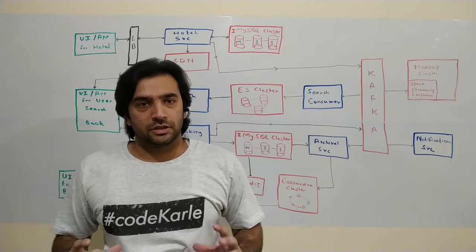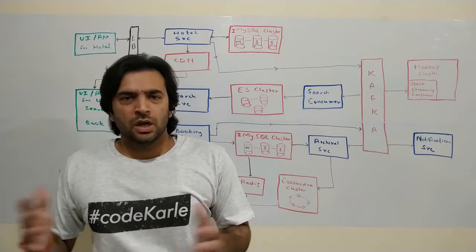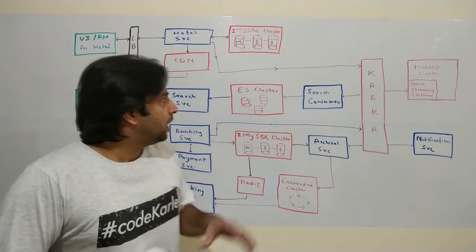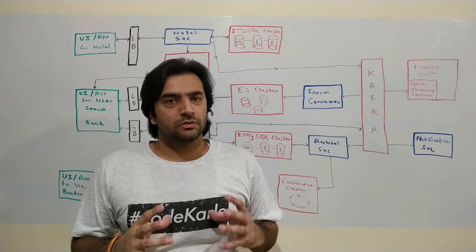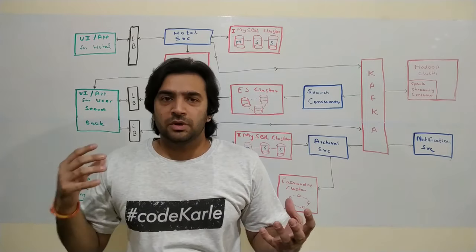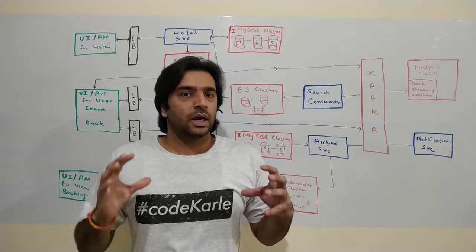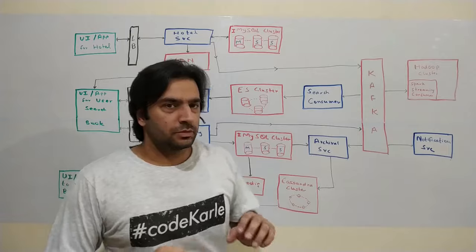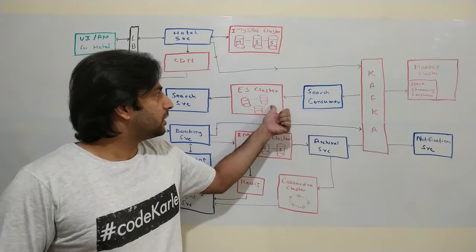For search, I'm using Elasticsearch, which is built on the Lucene platform — you could also use Solr, as both are similar components. The key reason for Elasticsearch is supporting fuzzy search. If a user searches for a hotel in Maldives with a typo, I don't want them to get no results. All hotel data flows through Kafka via the search consumer into this Elasticsearch cluster.